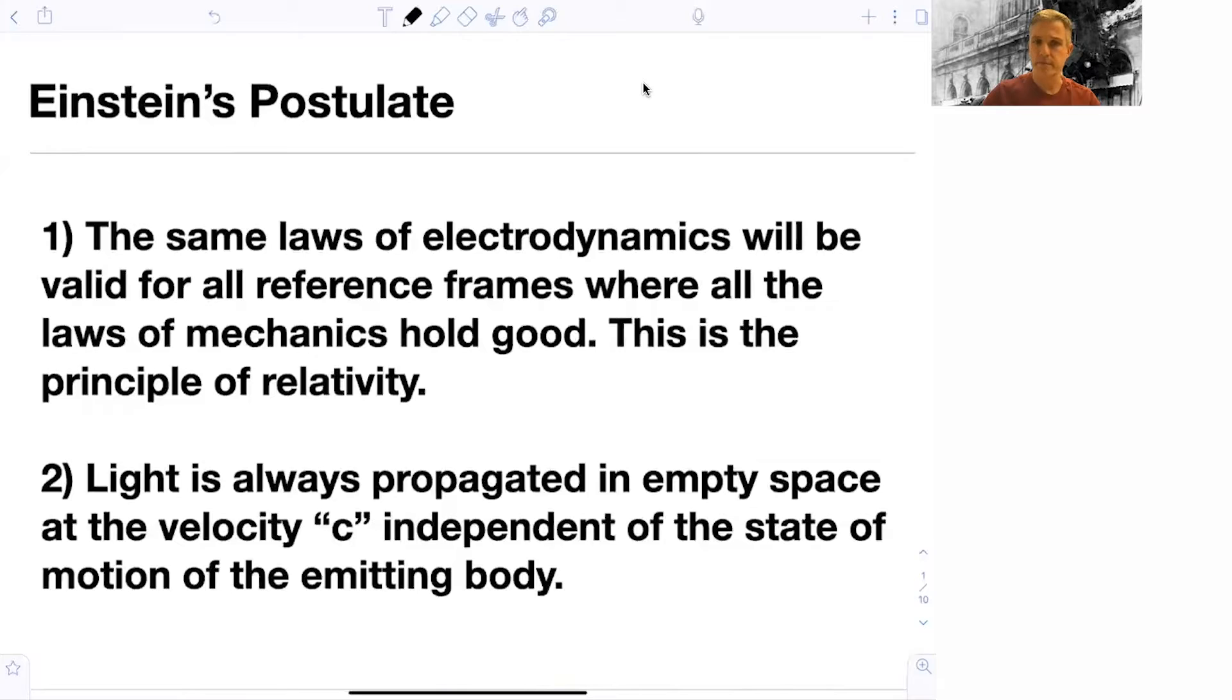The second postulate is that light is always propagated in empty space at a velocity c, independent of the state of motion of the emitting body. So with these two postulates, we will now derive the theory of special relativity. And again, we'll start by talking about time.